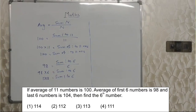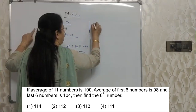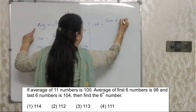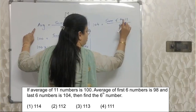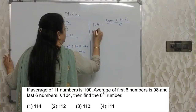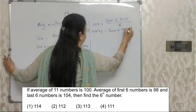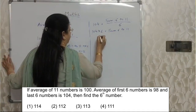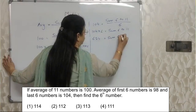They have given the average of the last 6 numbers as 104. Using the same formula, 104 into 6 will give the sum of numbers 6 to 11. I am purposely writing this as 6 to 11 — you will understand why later. That gives us 624 as the sum of numbers 6 to 11.